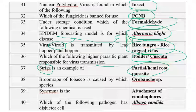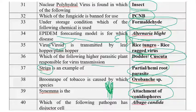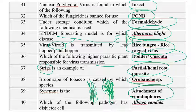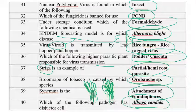Broomrape of tobacco is caused by the species Orobanche — the other name of Orobanche is broomrape. Synnema is the arrangement of conidiophores: long branched erect conidiophore arrangement is called synnema. The pathogen which has disjunctor cells — otherwise called separation discs — is Albugo. Conidia will be in chains where disjunctor cells are found for separation, which is why it is called a separation disc.